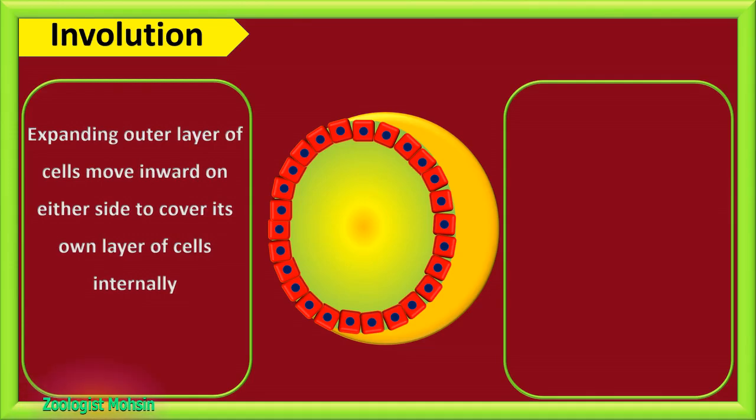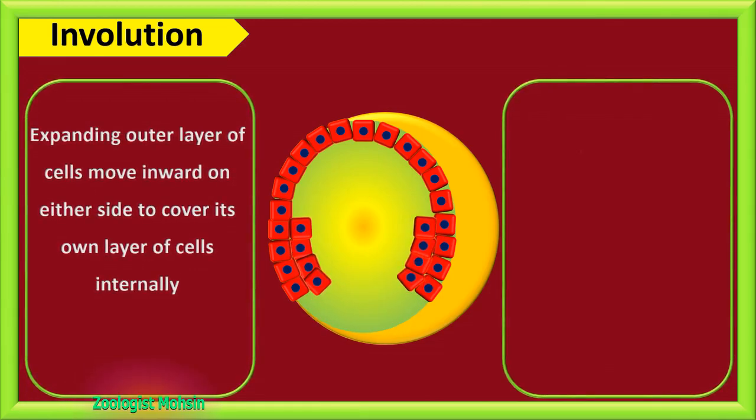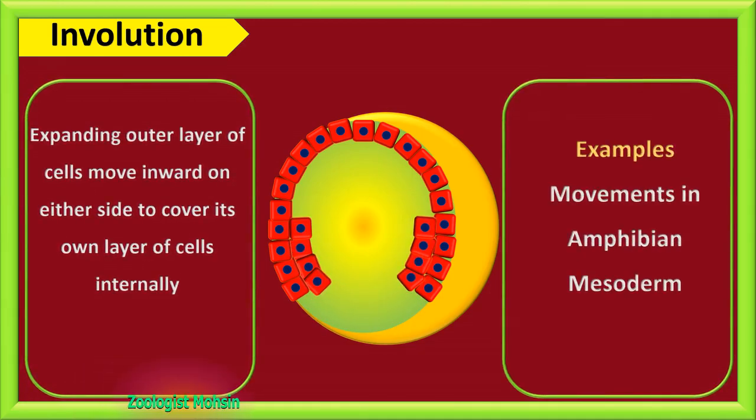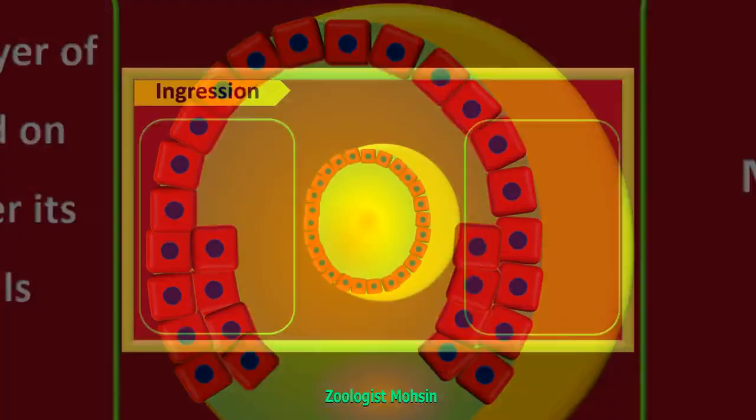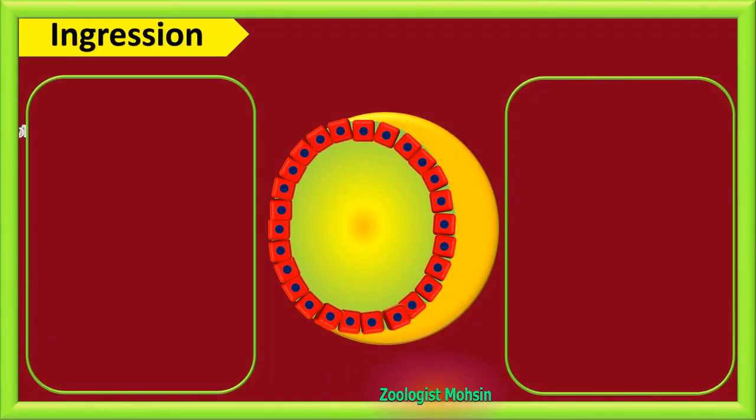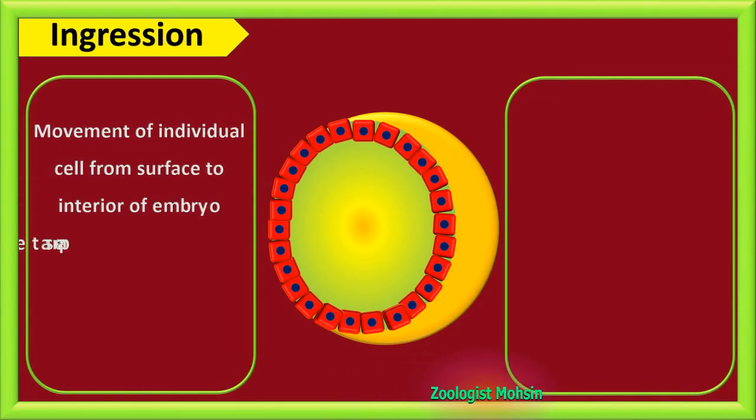Second is involution. Expanding outer layer of cells move inward on either side to cover its own layer of cells internally. Examples: movements in amphibian mesoderm produce new layers inside as a result of involution.